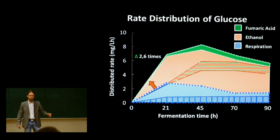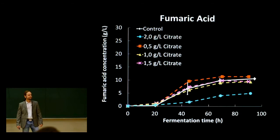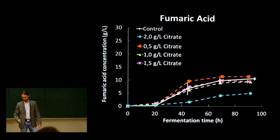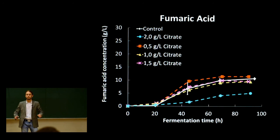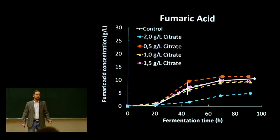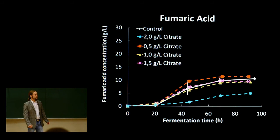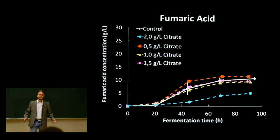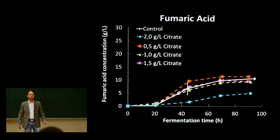We have a look at the fumaric acid data. From this data, there is no real improvement on the control — the control is the white line, no citrate added. The only one that performs better is the 0.5 gram per liter citrate concentration, but it really doesn't perform that much better compared to the glucose concentration profiles. A possible reason for this, other than the additional respiration mentioned, is the precipitation of calcium fumarate. Respiration inside this cell indicates energy requirements — the more respiration, the more energy the cells require. Citrate is a highly unlikely cause for additional energy requirements within these cells, so the more probable reason is the precipitation of calcium fumarate.